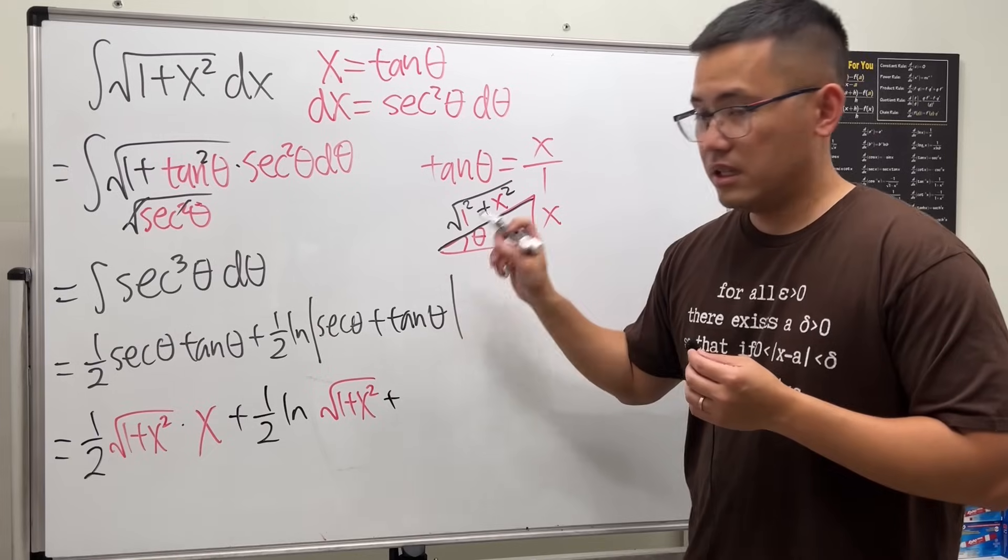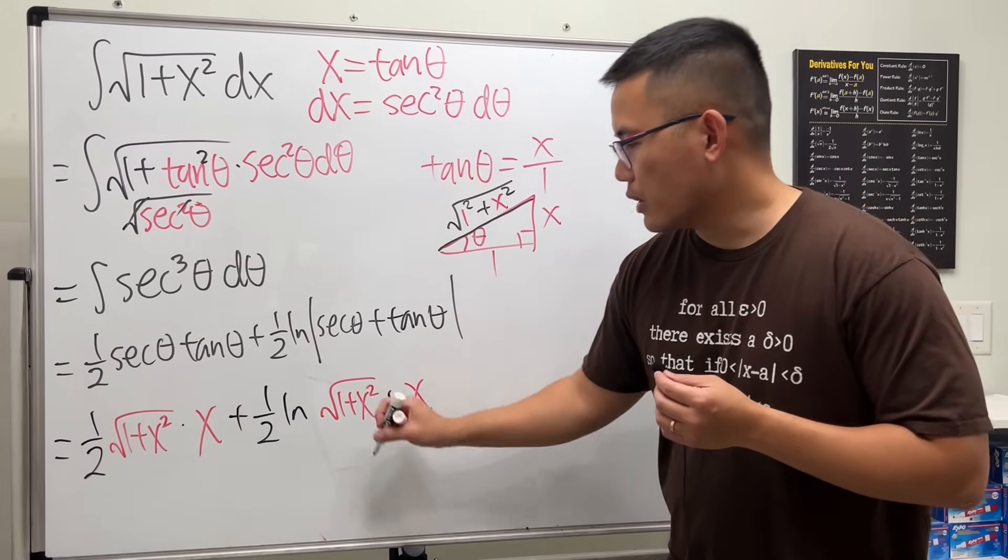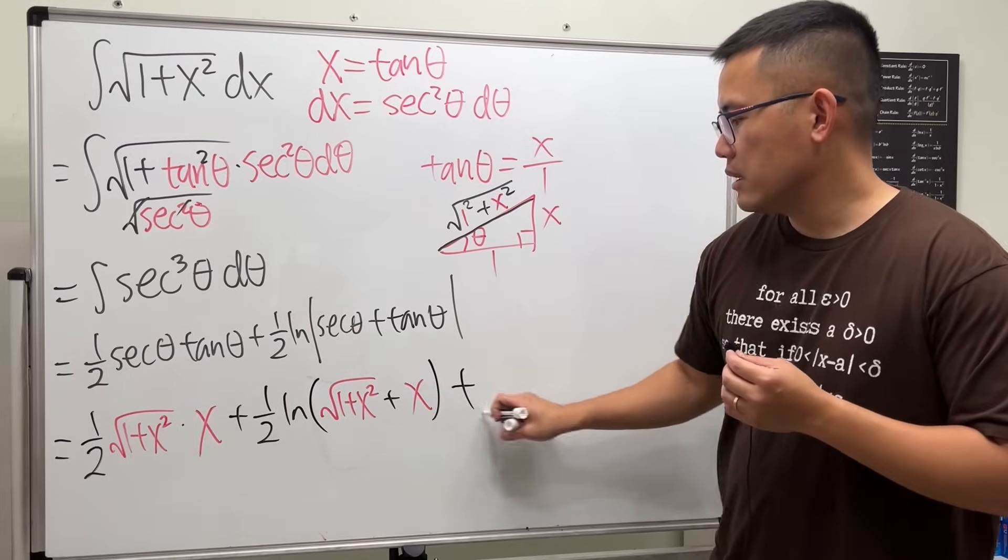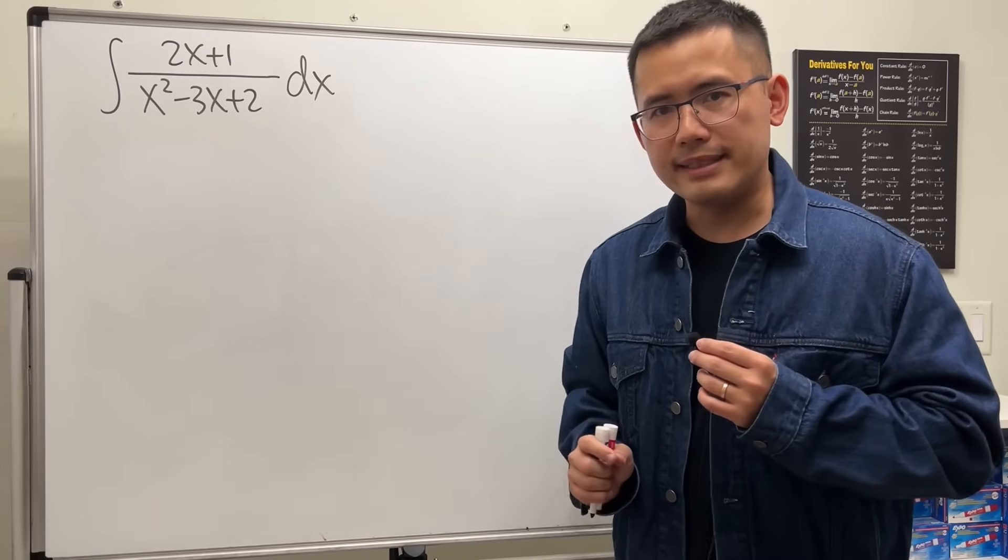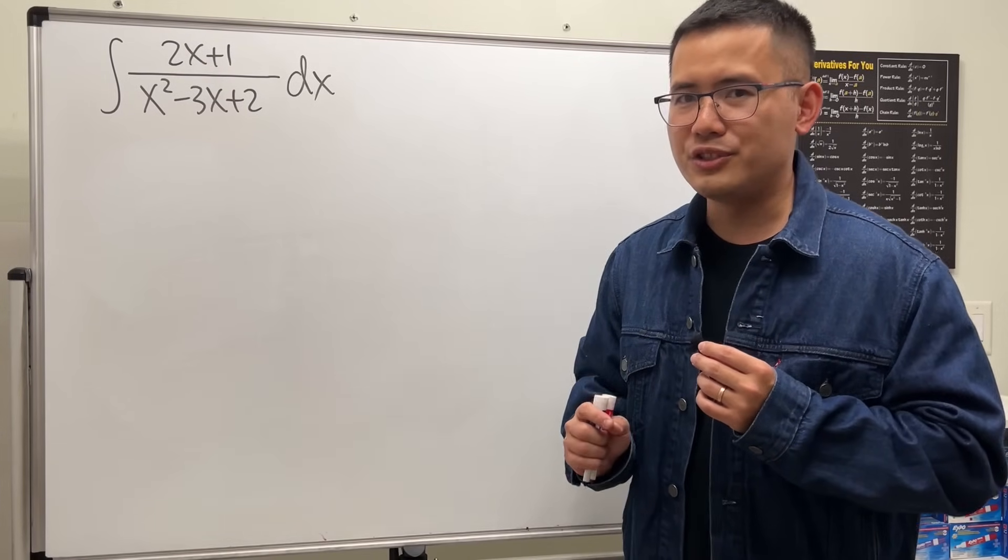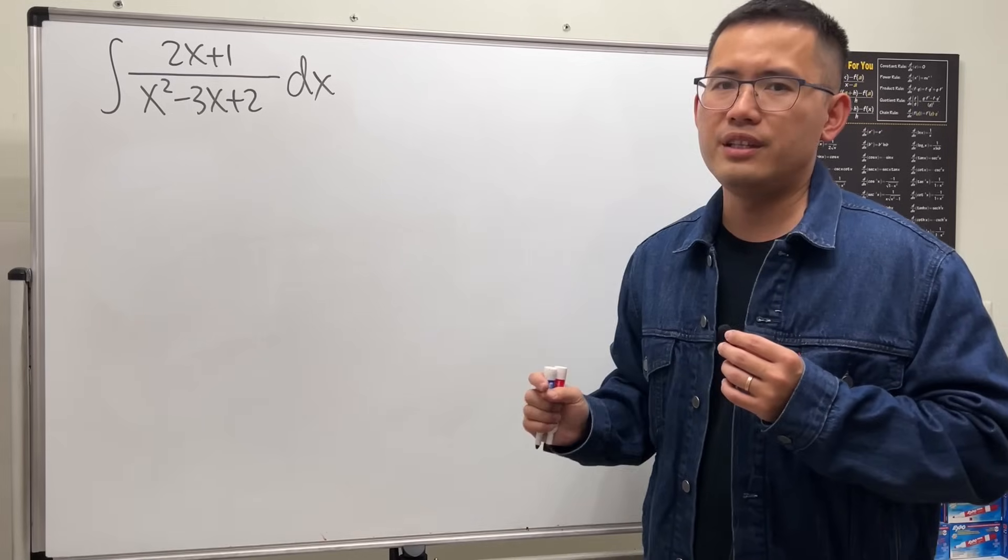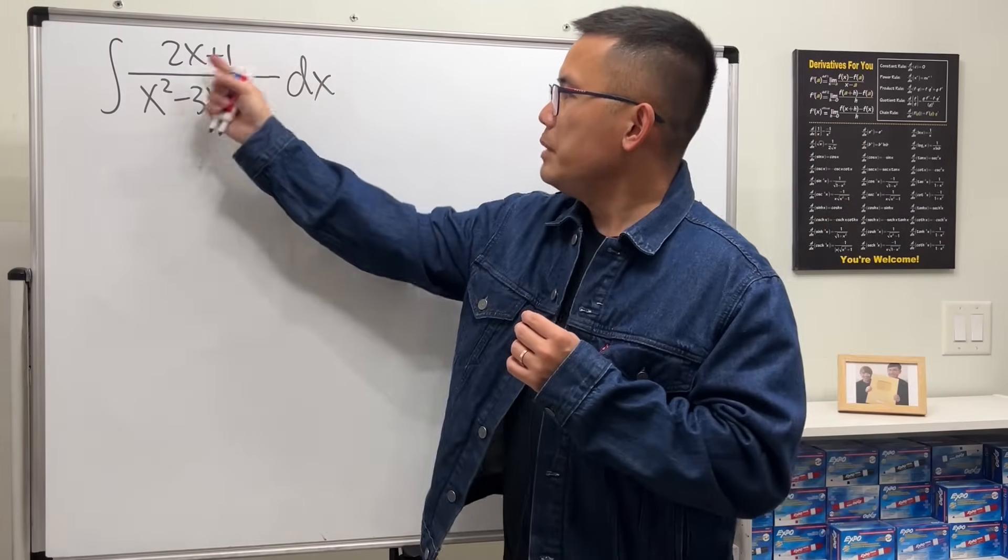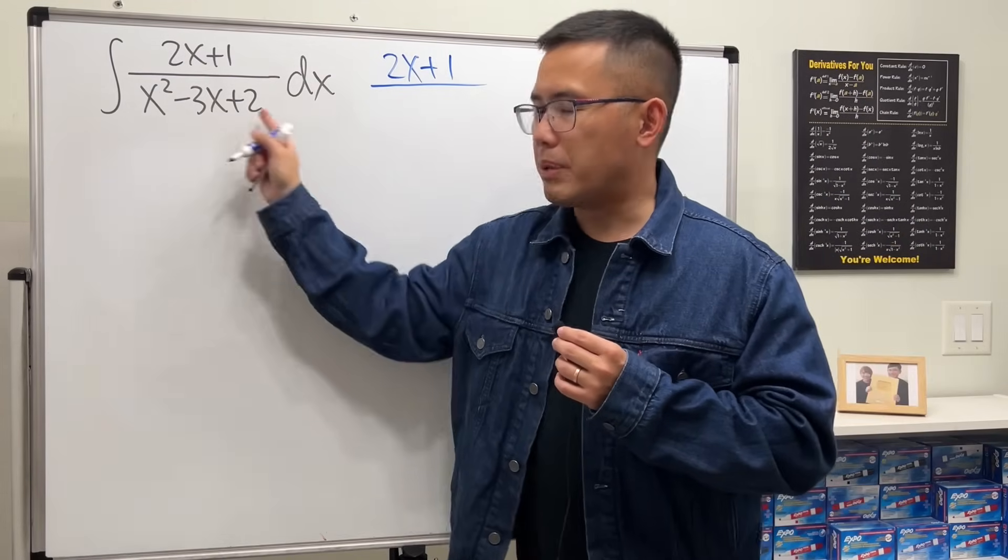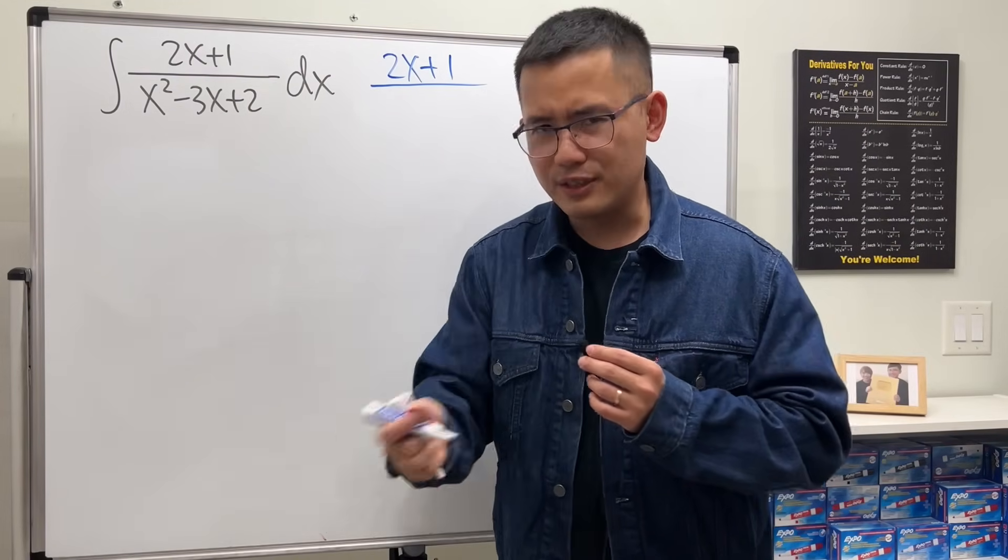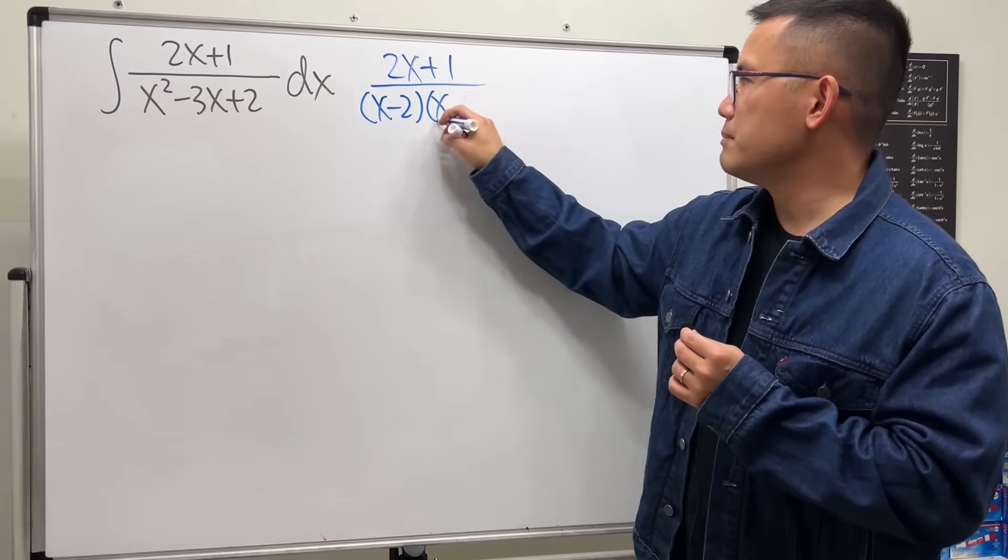Day five. Today I will show you guys how to do partial fraction decomposition to break down this into smaller fractions that we can actually integrate. Have a look. Let me write down the top right here: 2x plus 1. Over—for the bottom we can actually factor, right? So let's go and factor it. We get x minus 2 times x minus 1.